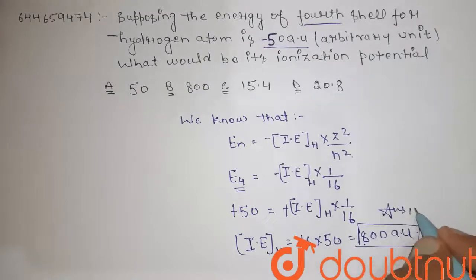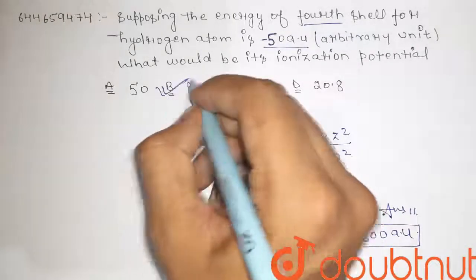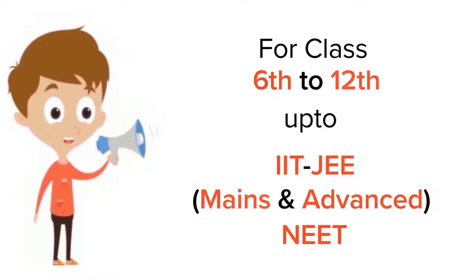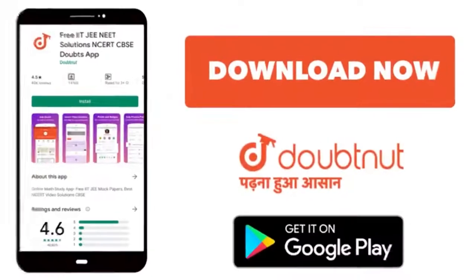This is the final answer, so correct option is option B. Thank you. For class 6 to 12, IIT-JEE and NEET level, trusted by more than 5 crore students, download Doubtnut app today.